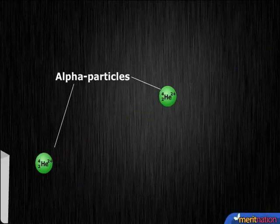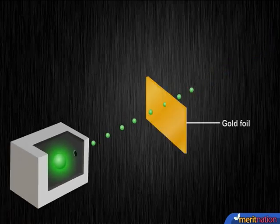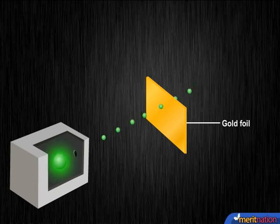While performing experiments on radioactivity, Ernest Rutherford bombarded fast-moving alpha particles on a thin gold foil. He observed the reflection of the alpha particles with the help of a screen.